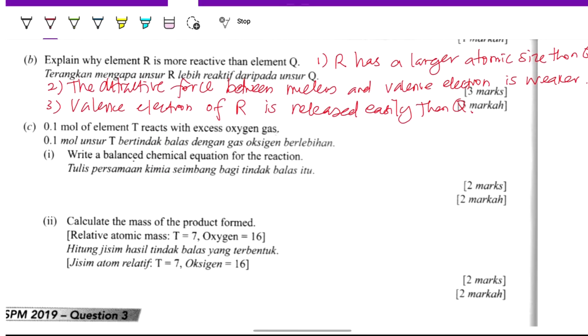0.1 mole of element T reacts with excess oxygen gas. First, write the balanced chemical equation. T reacts with oxygen O2 to become T oxide, T2O, because T is in group 1, charge is plus 1. We need to balance the equation first.